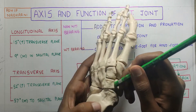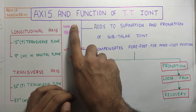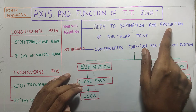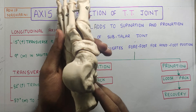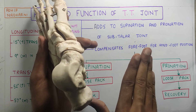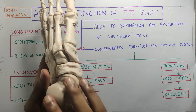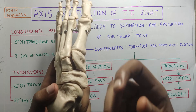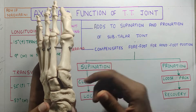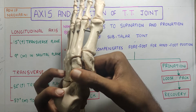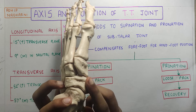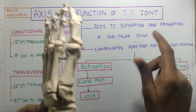Now, coming to the function of the transverse tarsal joint — it has two functions: non-weight bearing and weight bearing. In non-weight bearing, it adds to the supination and pronation of the subtalar joint. We saw that when the calcaneus moves into plantar flexion, adduction, and inversion, there is supination of the foot at the subtalar joint. The transverse tarsal joint adds to this — the hind foot goes for some amount of supination and the transverse tarsal joint contributes added supination, and the same applies for pronation.